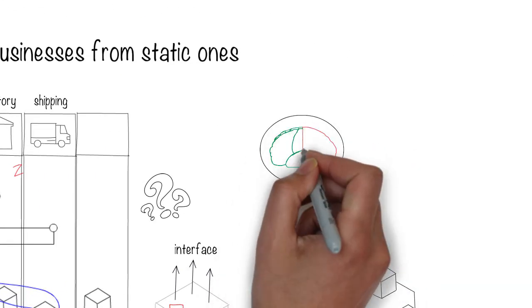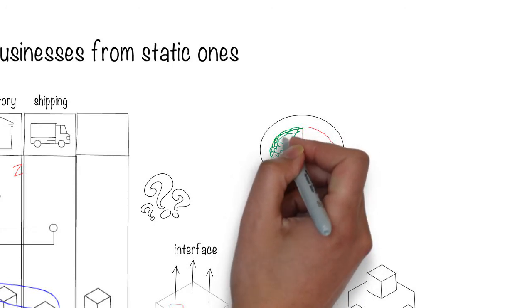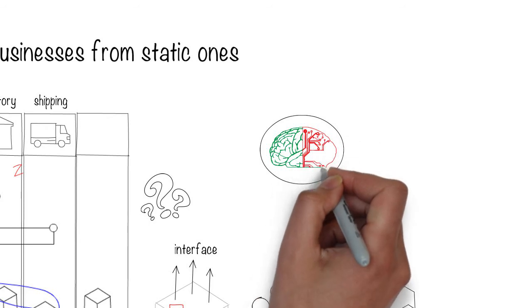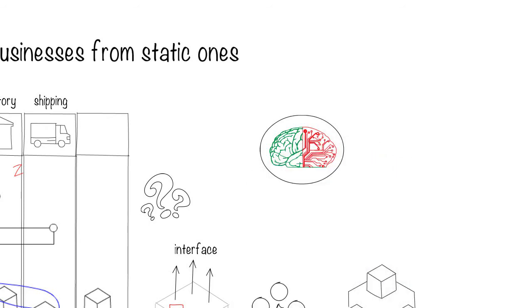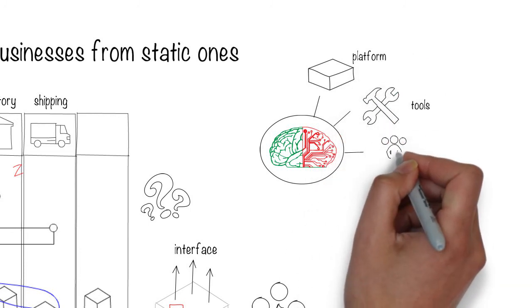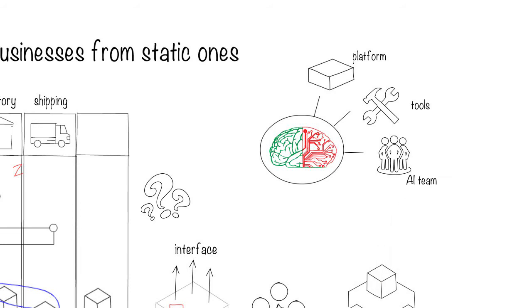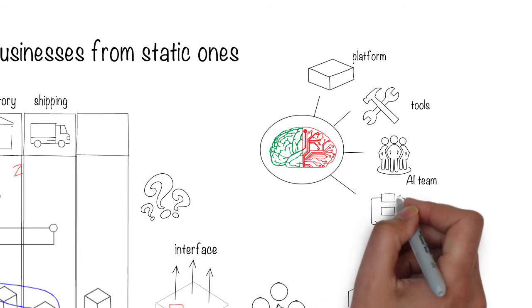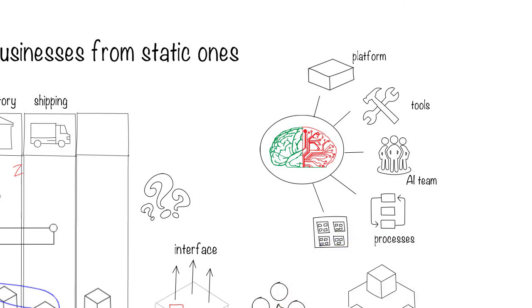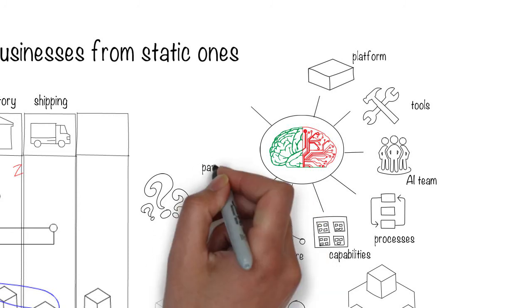Your business might be starting on a transformation journey with artificial intelligence playing a big role. In this exercise, you have to make many decisions such as what platform to use, what tools to use, how to structure your AI team, what processes should get priority, what capabilities you need to develop, how to structure your organization, what vendors to partner with, etc.